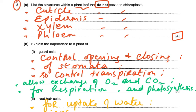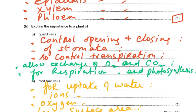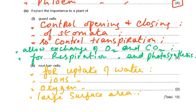Explain the importance of guard cells to a plant. Guard cells control the opening and closing of stomata, thereby controlling transpiration (loss of water vapour from the leaf through the stomata). They also allow exchange of oxygen and carbon dioxide — oxygen for respiration and carbon dioxide for photosynthesis. There are six mark scheme points available for four marks.